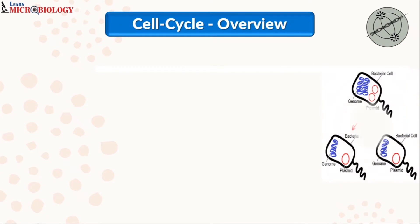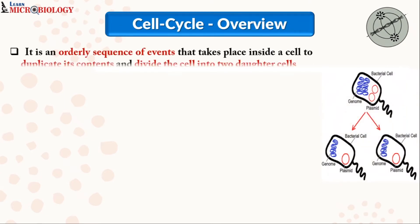Let us first understand what is a cell cycle. The cell cycle is an orderly sequence of events — it consists of many events which take place in a sequence in an orderly manner, and this cell cycle takes place inside the cell. The function of the cell cycle is to duplicate its contents and to divide the cell into two daughter cells.